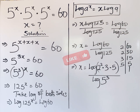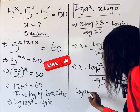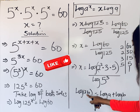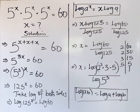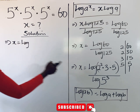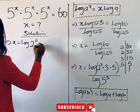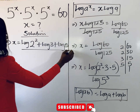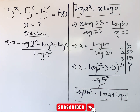Remember that for every log(a·b) it equals log(a) + log(b) — multiplication turns to addition. Applying this to the numerator, we get x = [log(2²) + log(3) + log(5)] / log(5³).